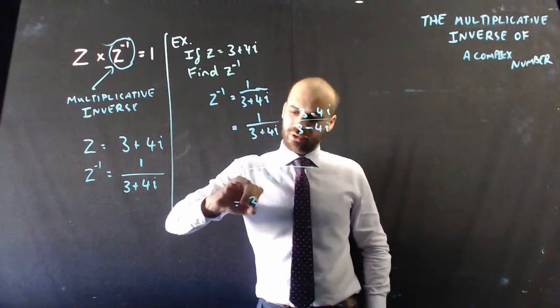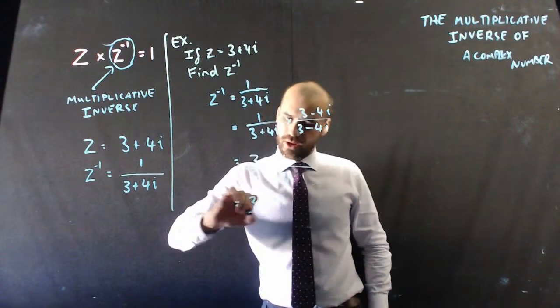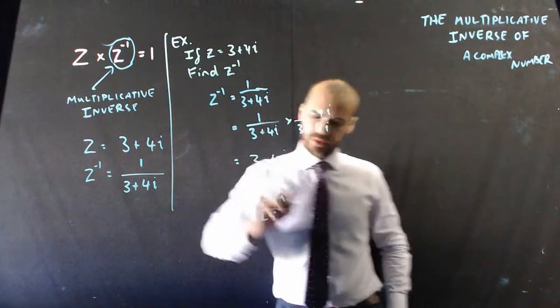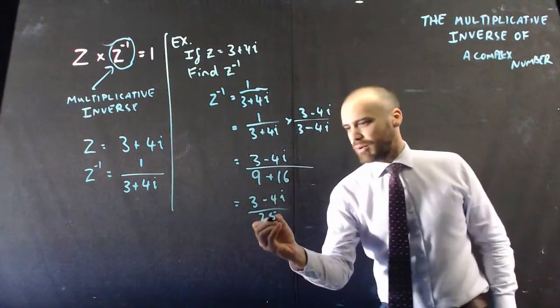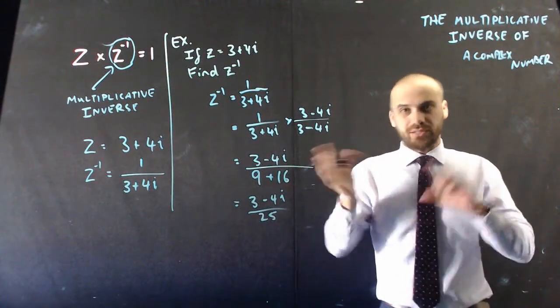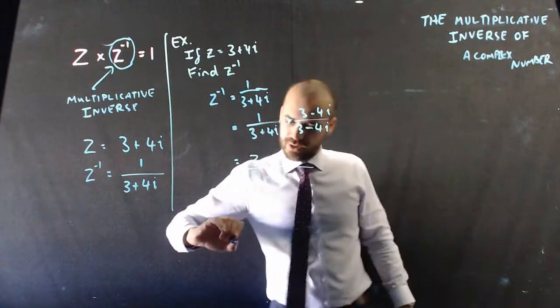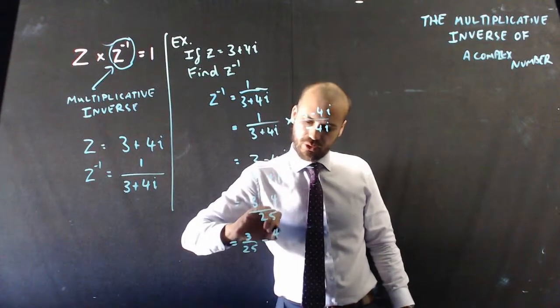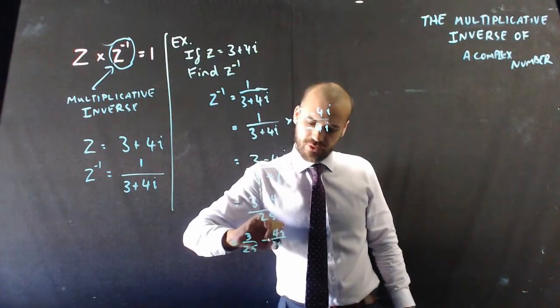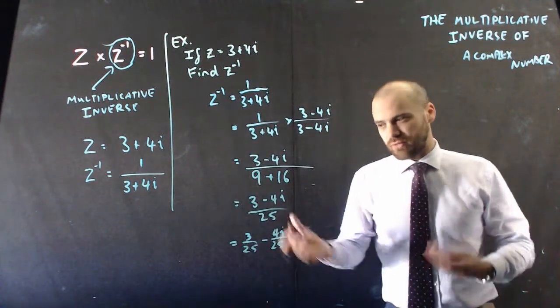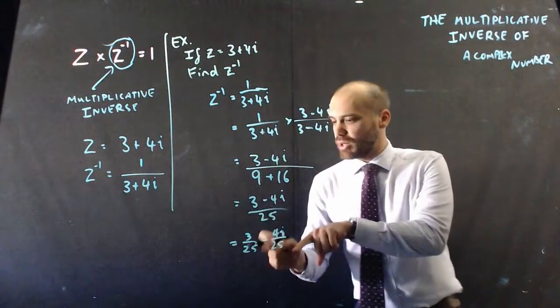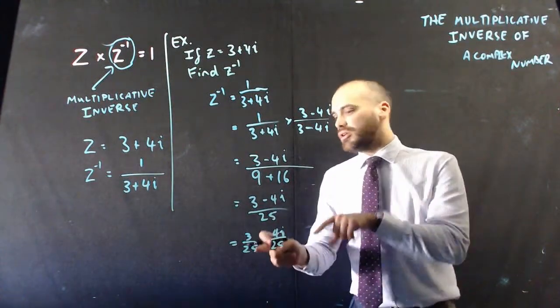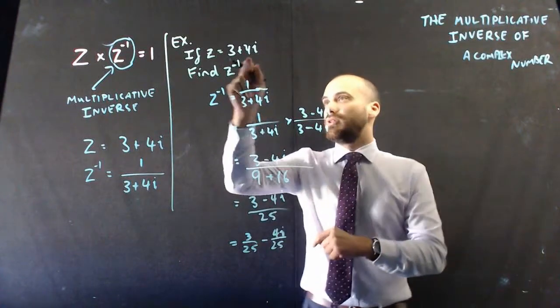So now I have 3 minus 4i over 25. That's pretty good. But we really want to be able to split it into real and imaginary components. So 3 over 25 minus 4i over 25 or 4 over 25i. Something like that. So that is my multiplicative inverse of that.